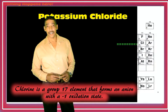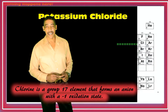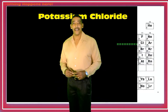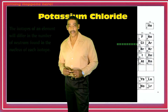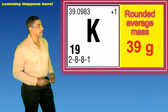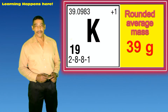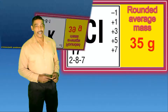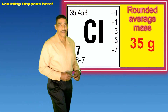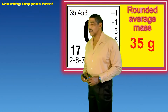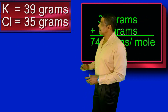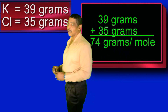To determine the GFM of this compound, we simply round the average mass listed on the periodic table. Remember, the average masses listed on the periodic table represent the weighted averages of all known isotopes of that element. For the element potassium, the average mass is listed at 39.0983, which may be rounded to 39. For the element chlorine, the average mass is listed at 35.453, which may be rounded to 35. When determining the GFM of potassium chloride, we simply add 39 for potassium plus 35 for chlorine.